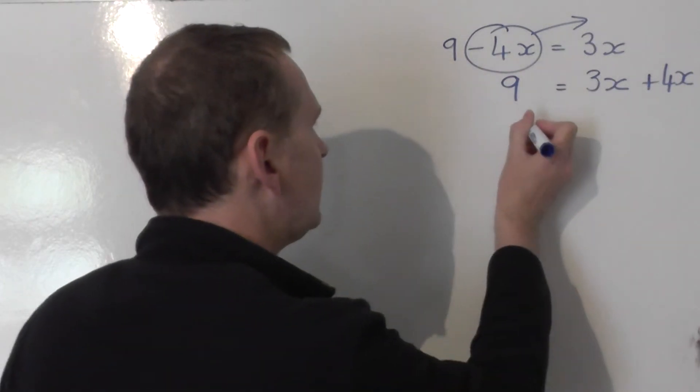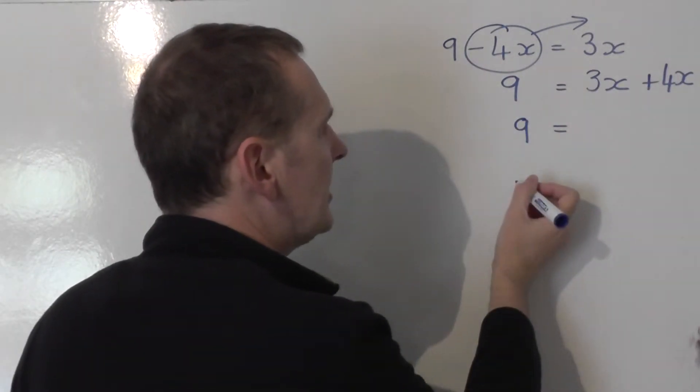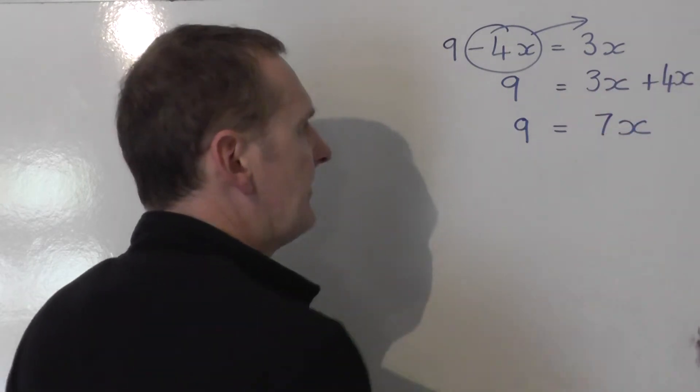Let's tidy up. On the left-hand side, you've got 9. On the right-hand side, 3x plus 4x, that's 7x.